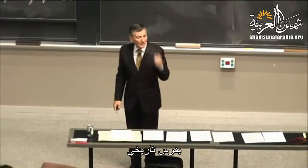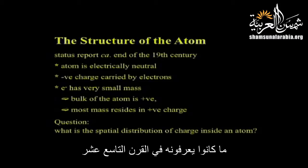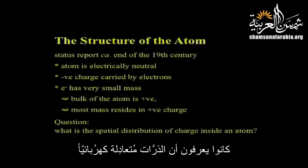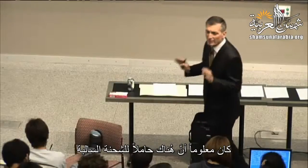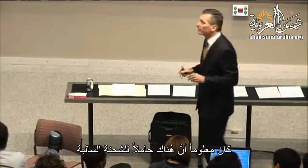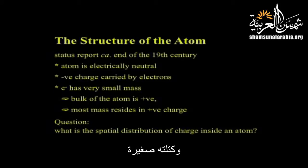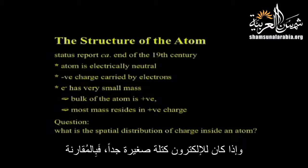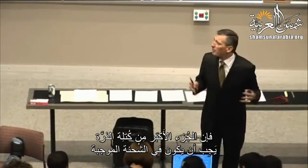We're going to begin with a history lesson — a status report around the end of the 19th century. What did we know then? The atom is electrically neutral. The negative charge is carried by electrons — we knew there was some carrier of negative charge. We knew further that the electron is very, very tiny, with small mass. And so if the electron has very small mass, then by difference the bulk of the mass of the atom must be contained in the positive charge.